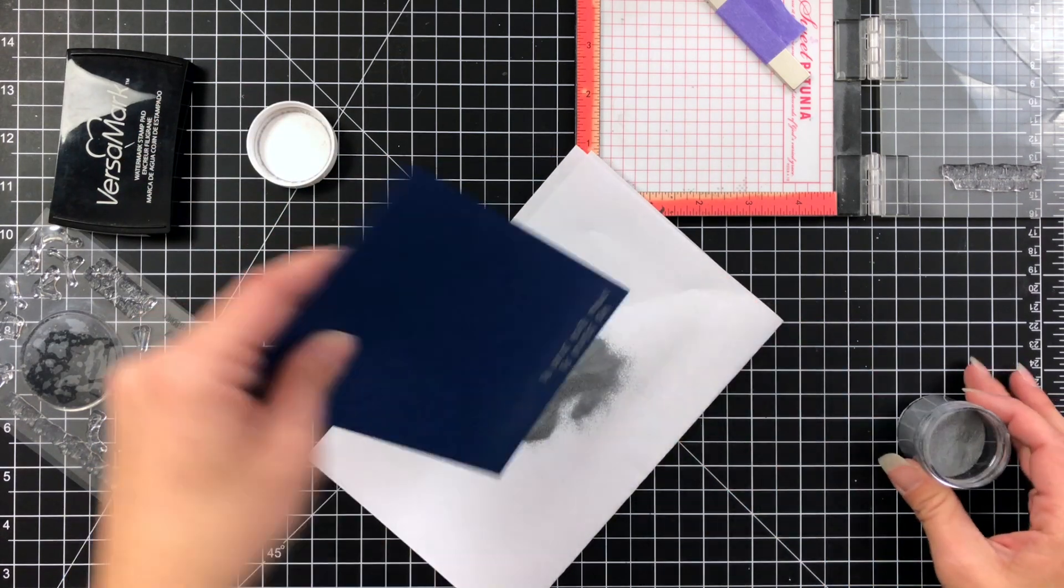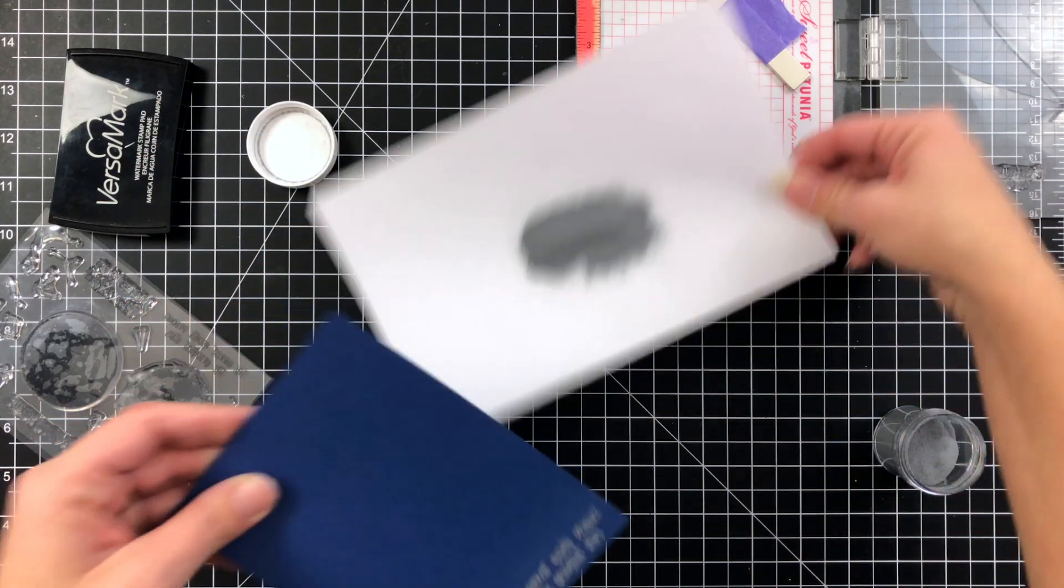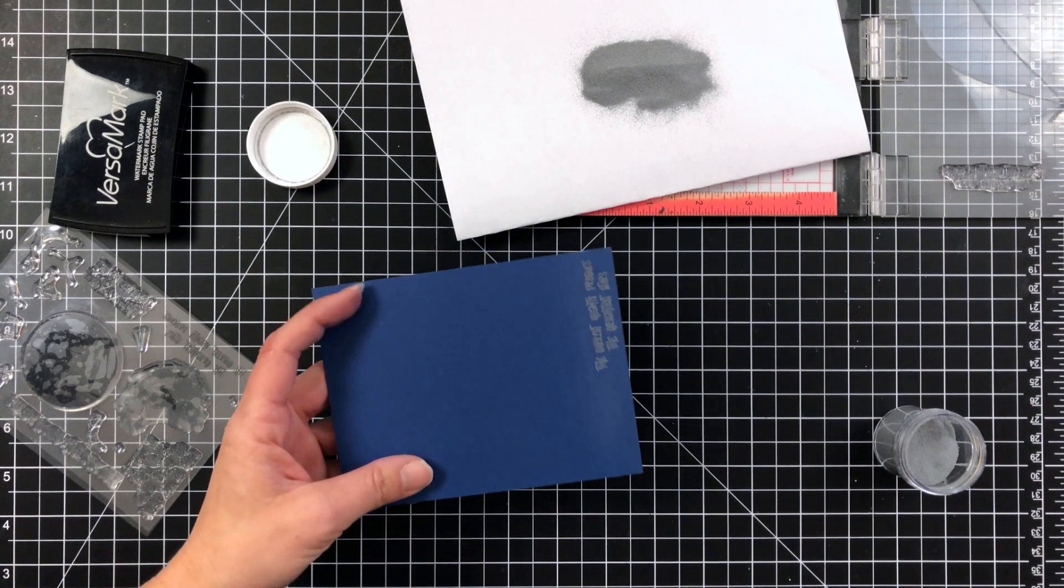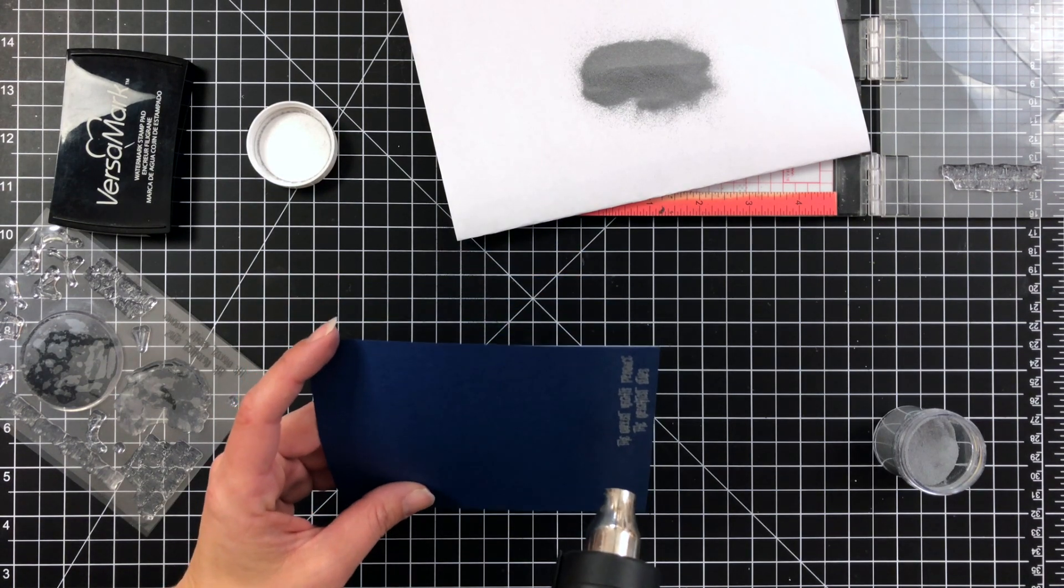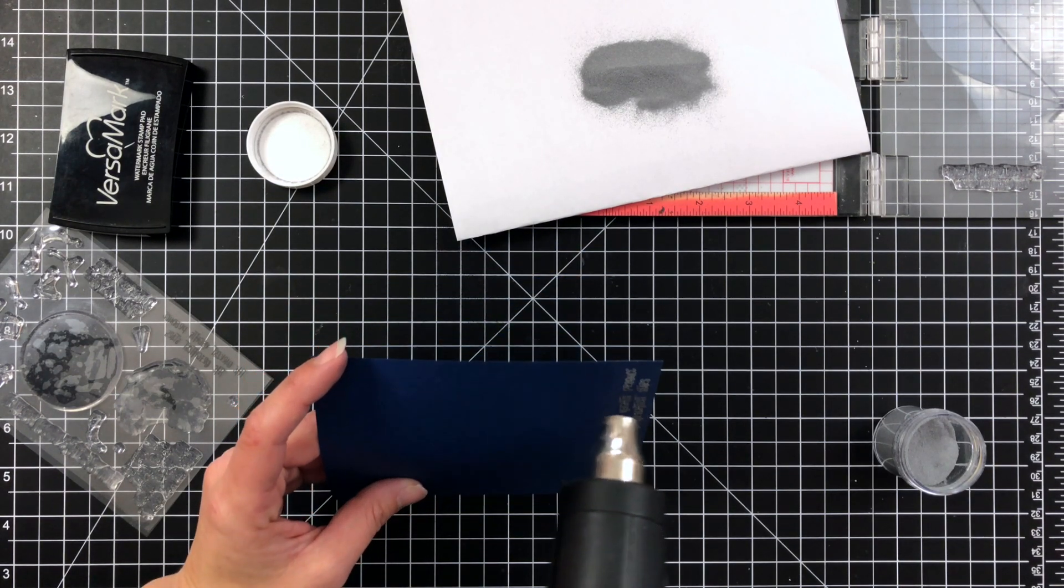This is Blue Denim Cardstock from Gina K Design. I just stamped that with some Versamark ink and then sprinkled on some silver embossing powder and I'm just going to heat that up with my heat tool.